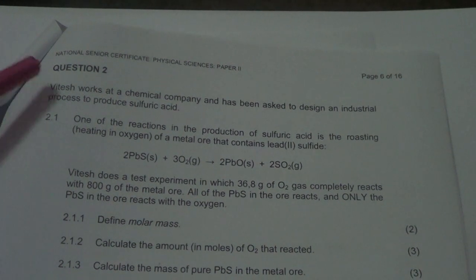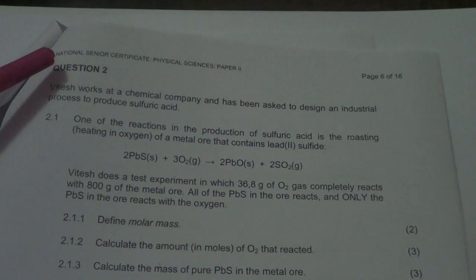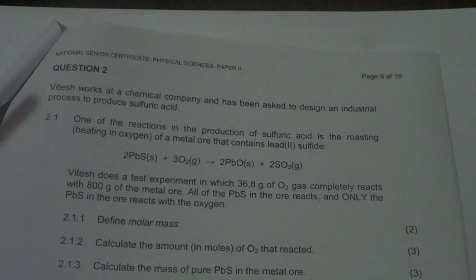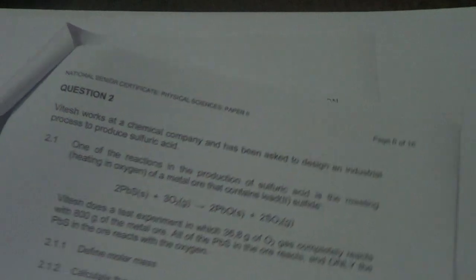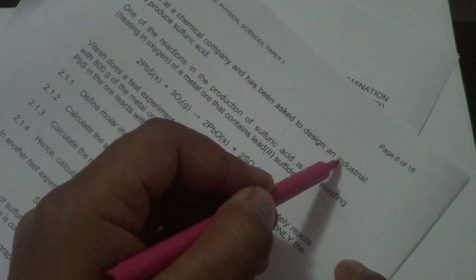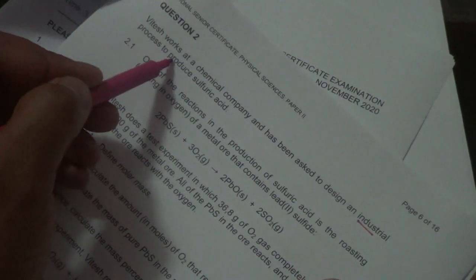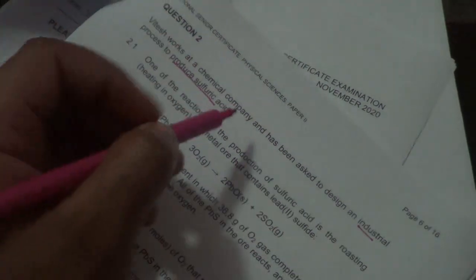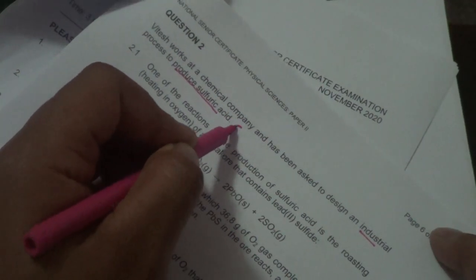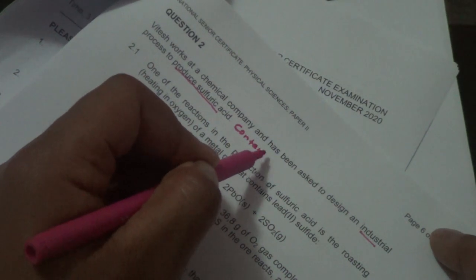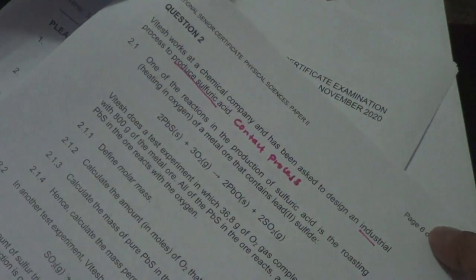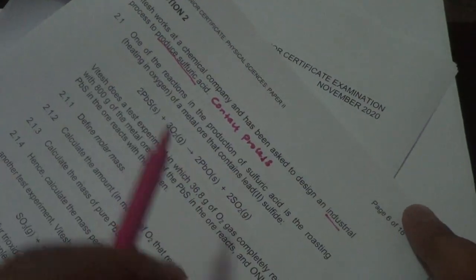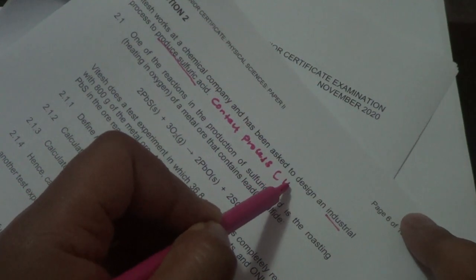Question 2 reads: Vitesh works at a chemical company and has been asked to design an industrial process to produce sulfuric acid. Now you know from your theory, once you hear that word industrial process to produce sulfuric acid, that's what is called the contact process.